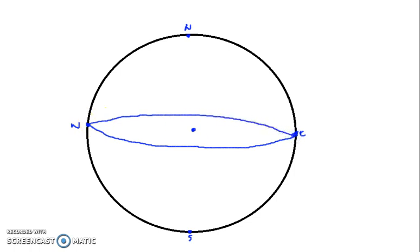Alright, so if we were given the line of latitude of say 45 degrees south, so 45 degrees south down here, let's draw that in, let's turn it into a 3D diagram.